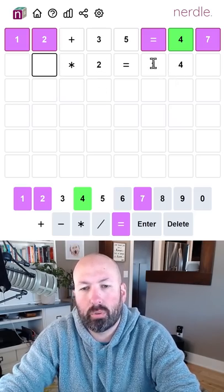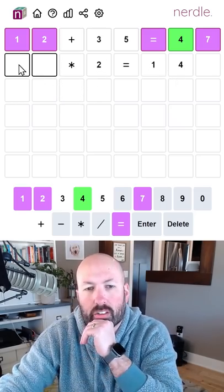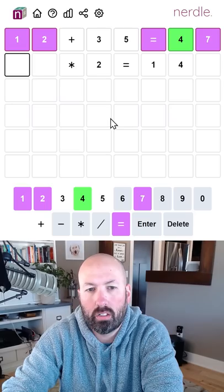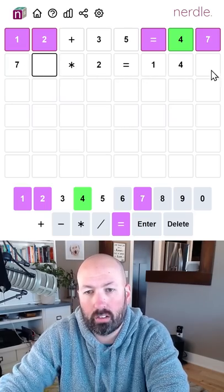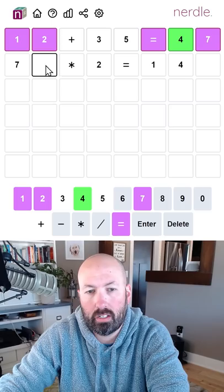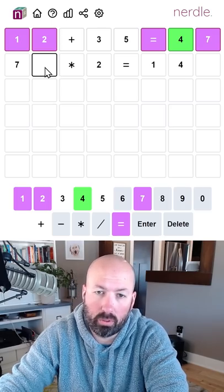All right, what if we multiply by two and we get 140-something as our result? So if we do 70-something times two, we get 140. That would work. So 71 would be 142.